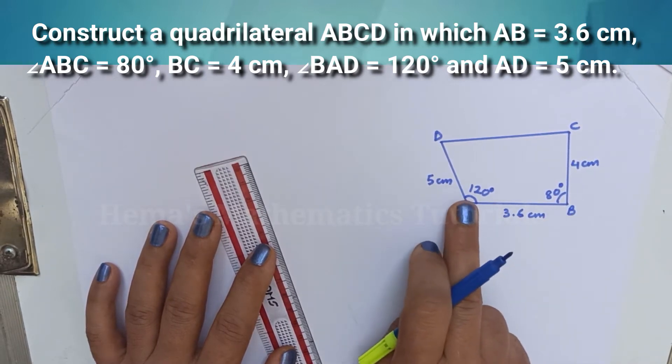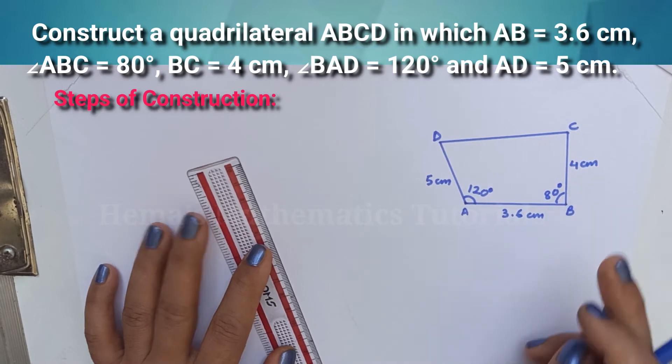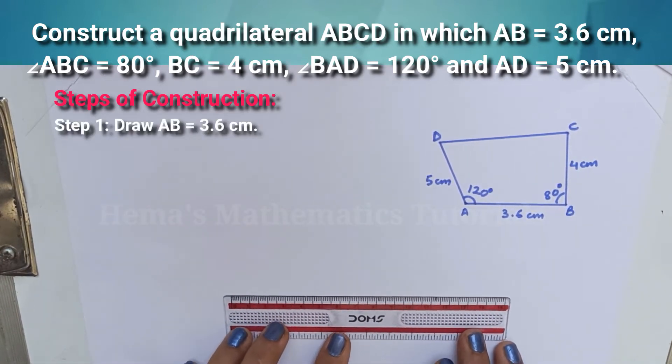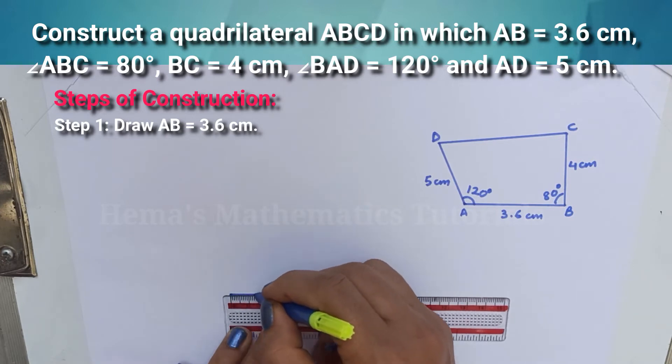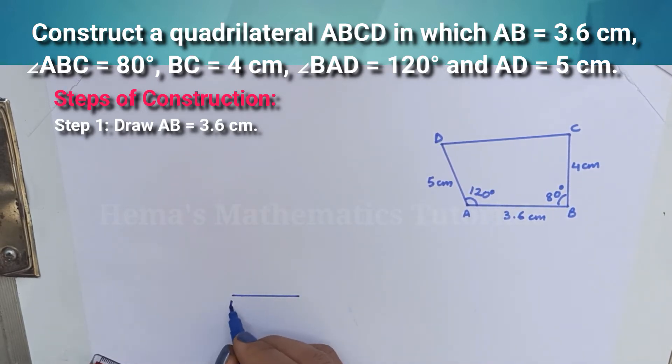Let us first draw AB equal to 3.6 cm. Label the line segment.